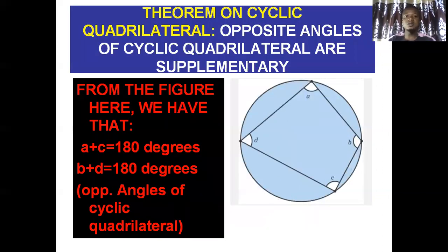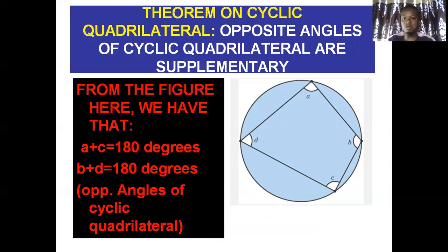Now let us get into the theorem on cyclic quadrilateral. This theorem on cyclic quadrilateral is telling us that the opposite angles of a cyclic quadrilateral are supplementary. What do I mean by supplementary? Two or more angles are said to be supplementary if they sum up to 180 degrees. So this theorem is telling us that if you come to any cyclic quadrilateral, the angles facing each other, when you add them up, it will give you 180 degrees.